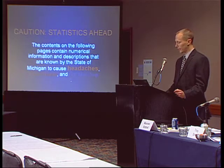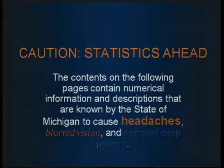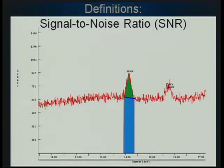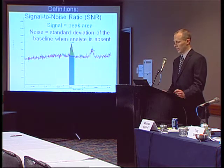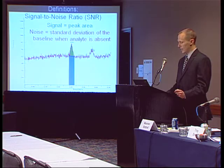Just a quick word of warning before we get going — statisticians, don't worry, you'll be fine here. The first term is signal-to-noise ratio. The signal is how much analyte is present; the noise is anything that interferes with that measurement — random fluctuations from the environment or from the instrument. Signal is often defined as the peak area; the noise in most typical applications is the standard deviation of the baseline when the analyte is absent. The signal-to-noise ratio is simply signal divided by noise.